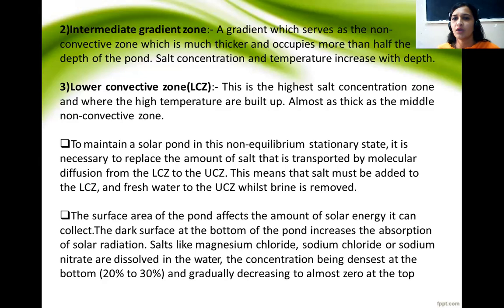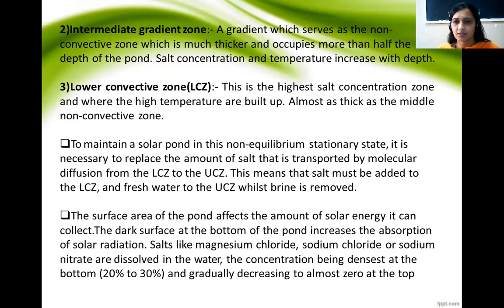The brine can be used to turn turbines and produce electricity. The surface area of the pond determines how much solar energy can be collected. The bottom surface should be darkened to increase absorption of solar radiation. Salts such as magnesium chloride, sodium chloride, or sodium nitrate are dissolved in the water at a concentration of 20 to 30 percent, highest in the lower convective zone and almost zero at the top.